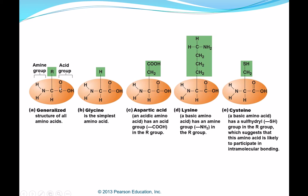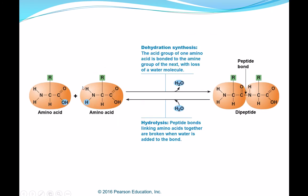Here you can see the generalized structure for all amino acids: the acid group, the amine group, and the R group. All amino acids share the same generic structure except for what is attached at the R group — that's what makes each amino acid different. When two amino acids combine, we get a dipeptide with a peptide bond between the amine group of one molecule and the acid group of another, formed through dehydration synthesis — the removal of water.